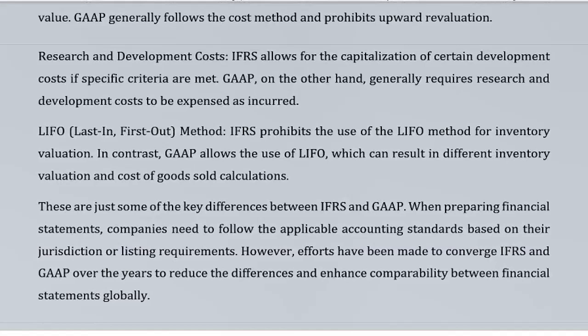LIFO — Last In, First Out — method: IFRS prohibits the use of the LIFO method for inventory valuation. In contrast, GAAP allows the use of LIFO, which can result in different inventory valuation and cost of goods sold calculations. These are just some of the key differences between IFRS and GAAP. When preparing financial statements, companies need to follow the applicable accounting standards based on their jurisdiction or listing requirements. However, efforts have been made to converge IFRS and GAAP over the years to reduce the differences and enhance comparability between financial statements globally.